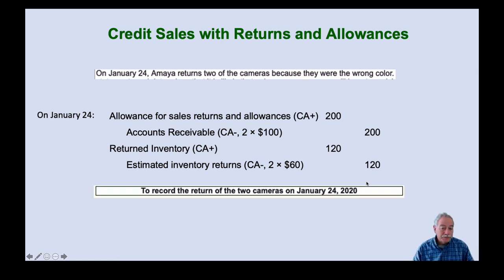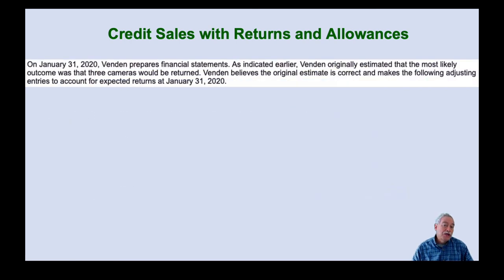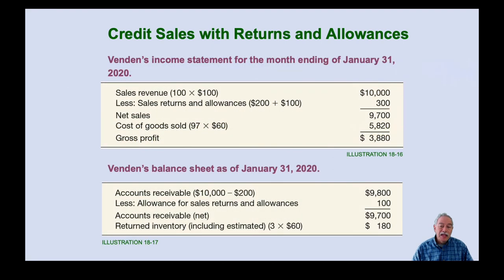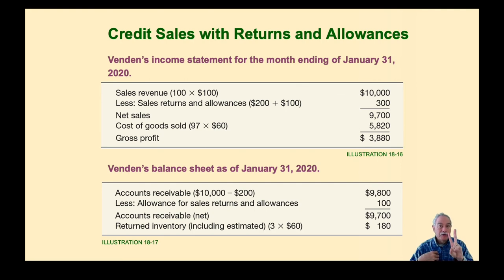On January 31st, no entry is needed — everything has already been recorded. The same income statement and balance sheet result from either approach: the contemporaneous approach shown in light blue, or the adjusting entry approach shown in light yellow that the book recommends. Both are valid methods for handling estimated sales returns.